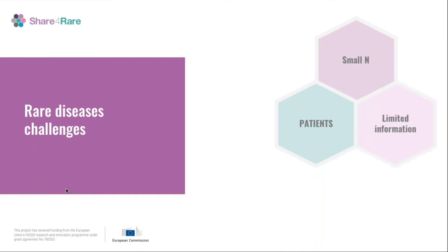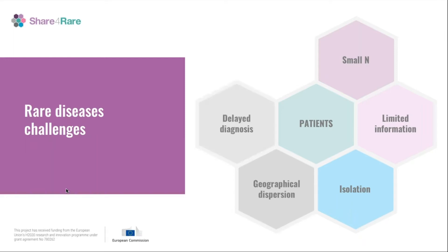There is also limited information about several rare conditions, meaning we need to improve the knowledge we provide to patients and families. From the psychological perspective, patients and families suffering rare diseases feel isolated because it is not common to find another patient or family geographically close to you. This geographical dispersion requires hard collaboration between patients at a global level. Another challenge is the delay in diagnosis — in some cases it takes many years to find the right diagnosis.